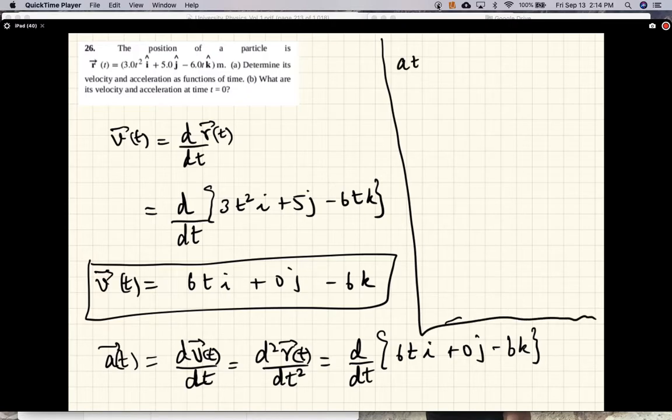The acceleration as a function of time: derivative of 6t is 6i, derivative of 0 is 0, derivative of minus 6, the constant, is also 0, so plus 0k.